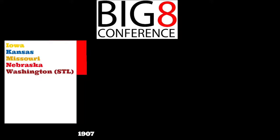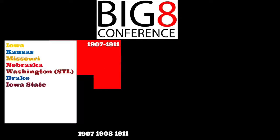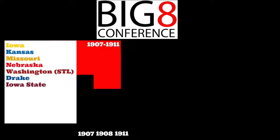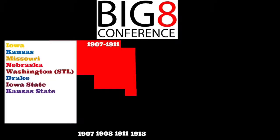Iowa left to help form the Missouri Valley Intercollegiate Athletic Association, along with Washington University in St. Louis, Kansas, Missouri, and Nebraska. In 1908, Drake and Iowa State joined the Missouri Valley. In 1911, Iowa left the Missouri Valley to rejoin the Big Eight. In 1912, Ohio State joined the Big Eight, making it the Big Nine. In 1913, Kansas State joined the Missouri Valley.